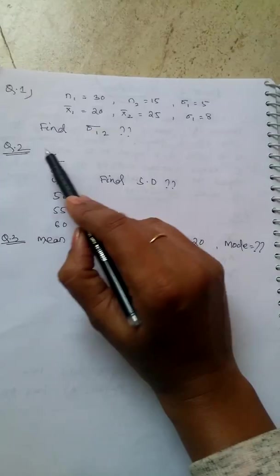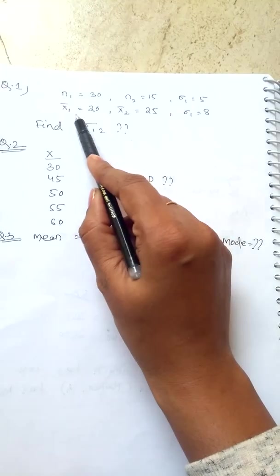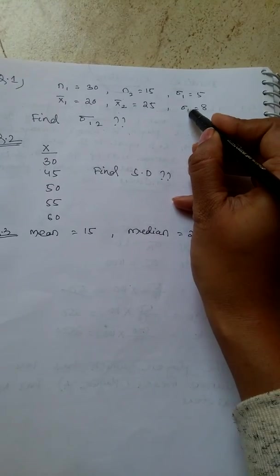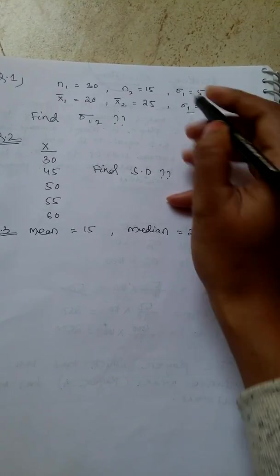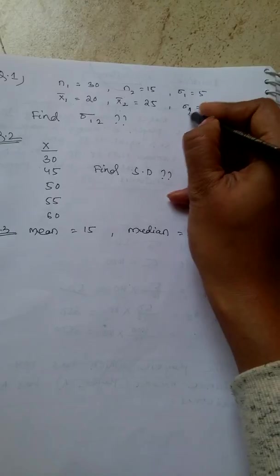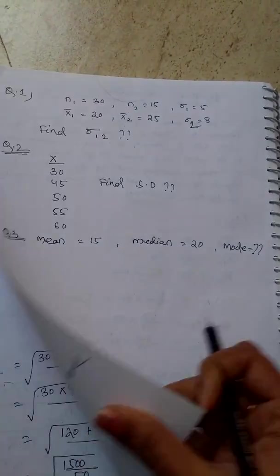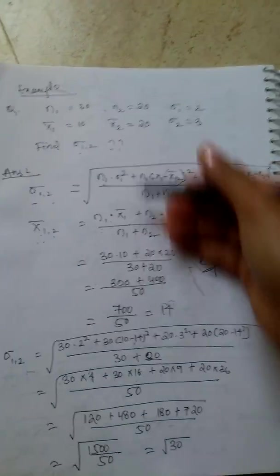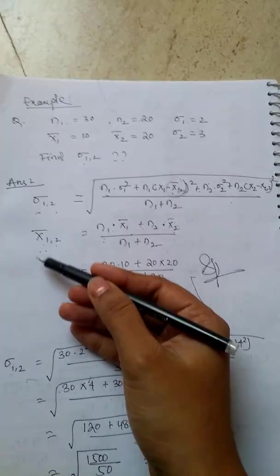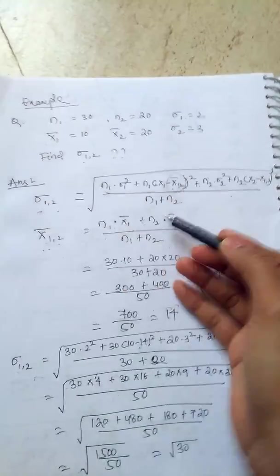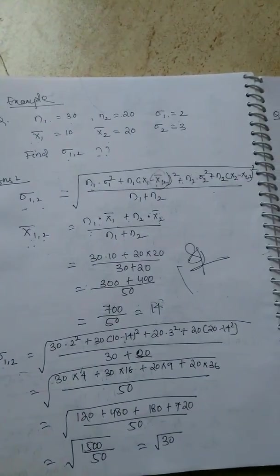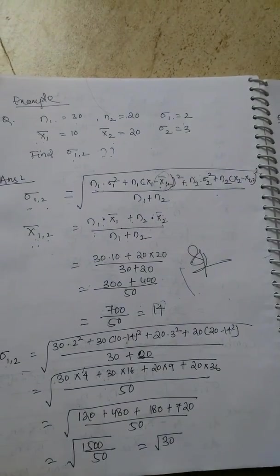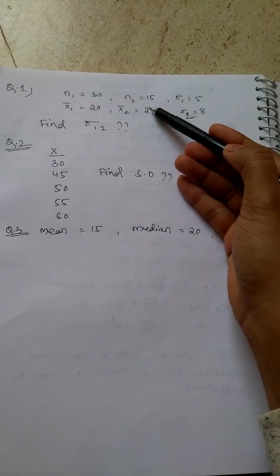In the question they gave n1, n2, standard deviation 1, the sum of x1 and x2, and standard deviation 2. You just put the formula — just like last time we saw the calculation. Put the formula for x1² then calculate accordingly. Please follow the same steps.